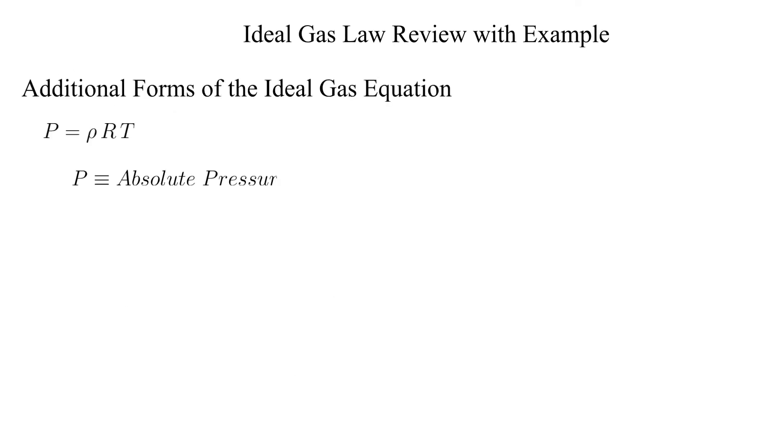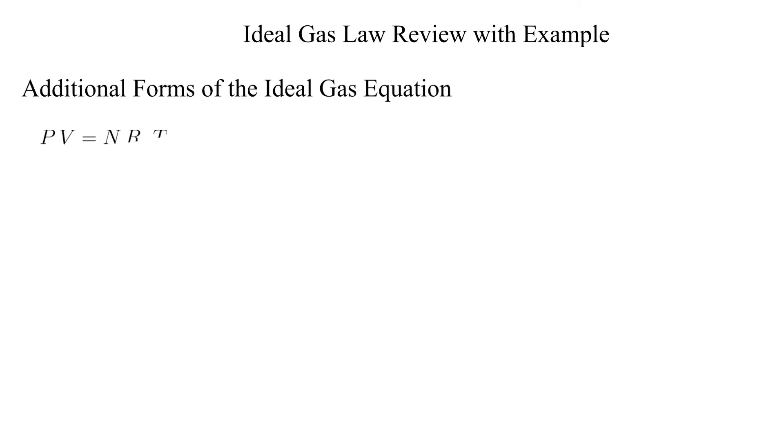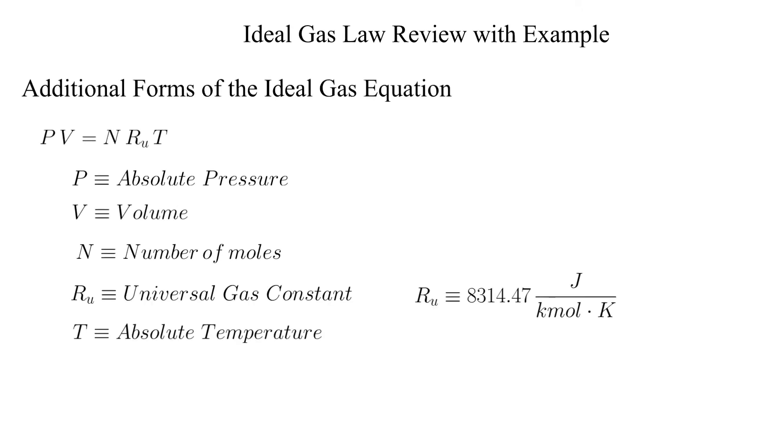There are other forms of the ideal gas equation. This one shown simply recognizes that the specific volume is the inverse of the density. We will actually be using this form of the ideal gas equation for nitrogen in the example. Another form of the ideal gas equation uses the universal gas constant and the number of moles.